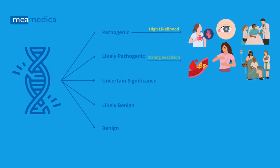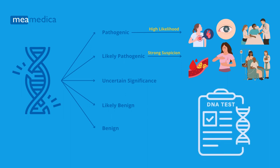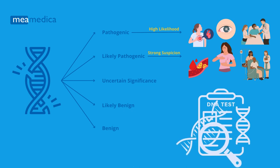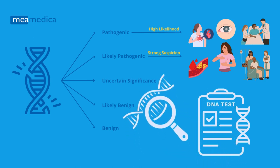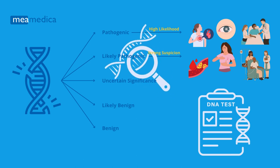A variant classified as likely pathogenic is one for which there is strong suspicion, but not definitive confirmation, that it is associated with a specific genetic disorder. With the Actionable Diseases DNA Test, it is determined if in your DNA one of these genetic variants classified as pathogenic or likely pathogenic is present.